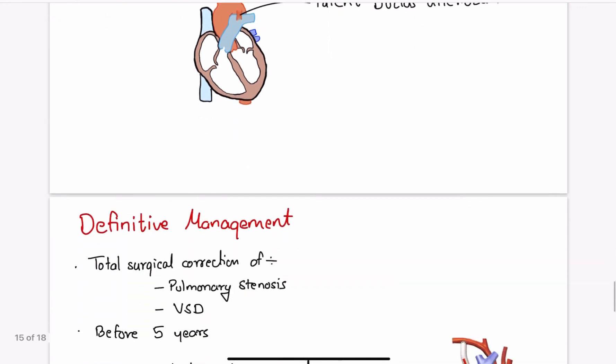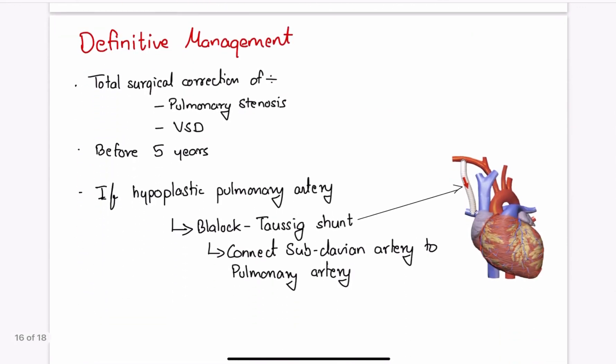But the definitive management of Tetralogy of Fallot is total surgical correction of pulmonary stenosis and closure of ventricular septal defect. This procedure is done before the age of five. If the pulmonary arteries are too hypoplastic to undergo surgery, palliation in the form of Blalock-Taussig shunt may be performed.